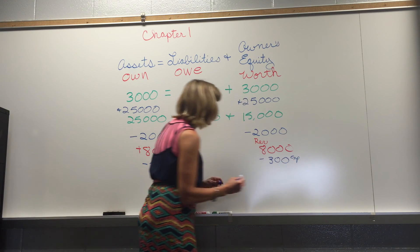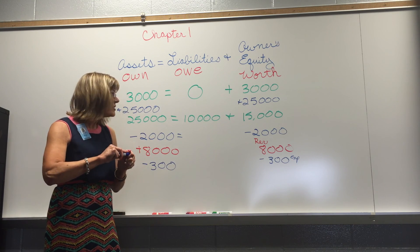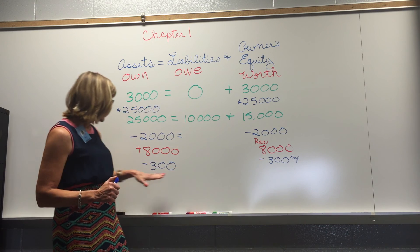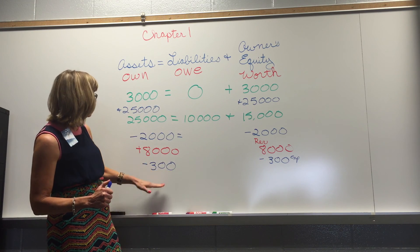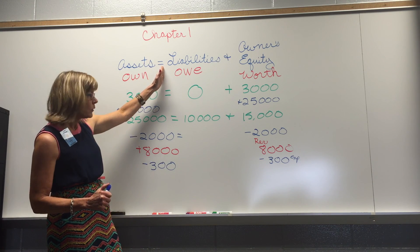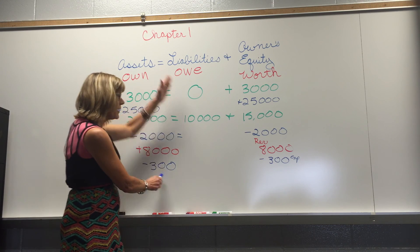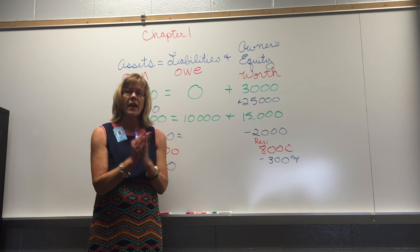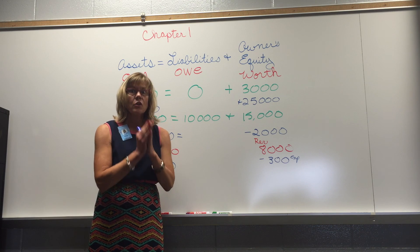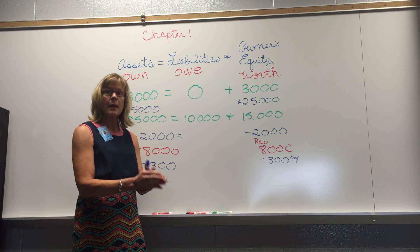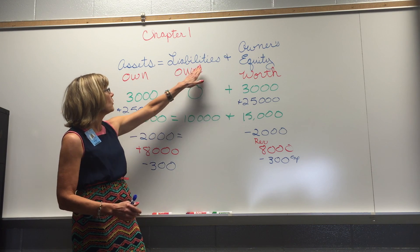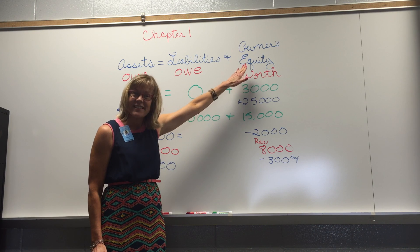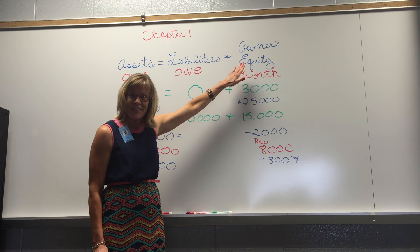Expenses are a division of owner's equity, and we're decreasing both sides of the accounting equation. We're taking off $300 for the utilities expense on both sides. After every single transaction, you've still got to end up with assets equaling liabilities plus owner's equity. It's the basic accounting equation, and you'll need to memorize it.